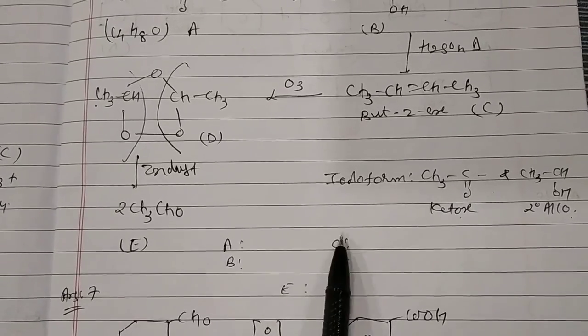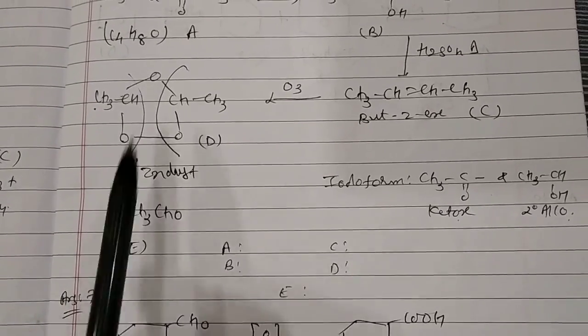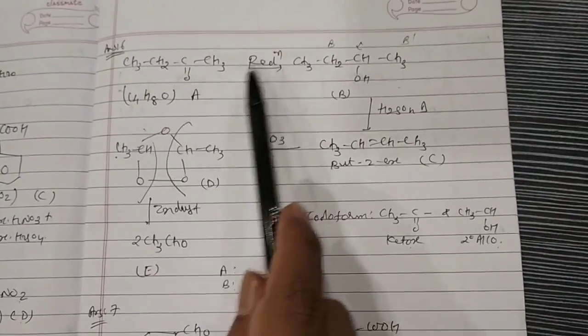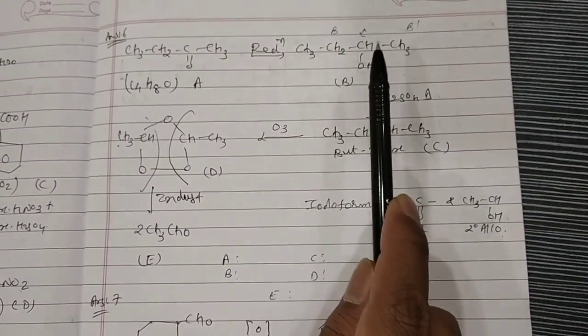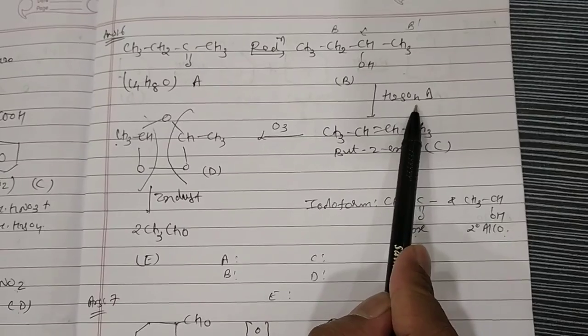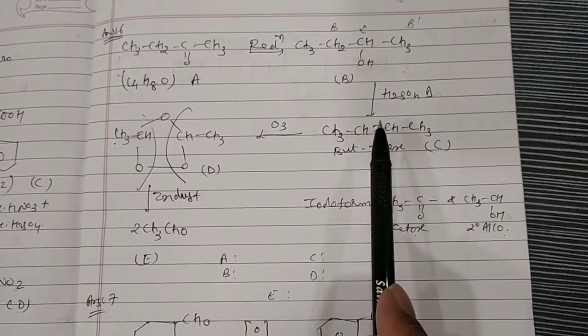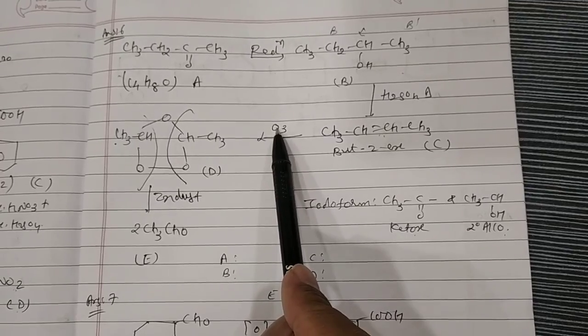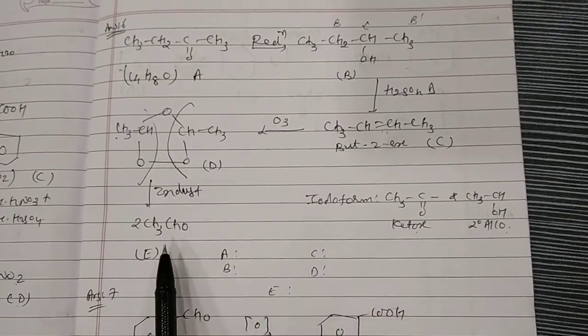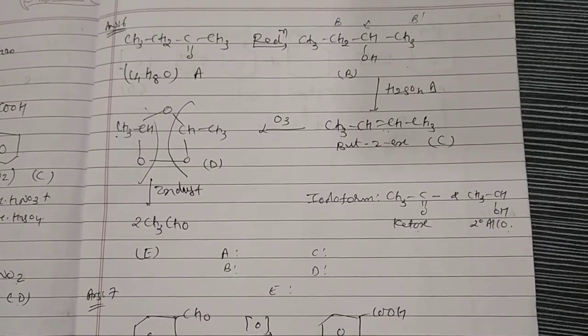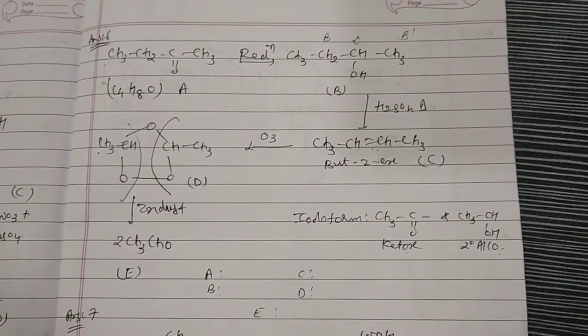Identify A, B, C, D, and E. That is your ketone. Ketone undergoes reduction to get alcohol. Alcohol undergoes dehydration to get alkene. Alkene undergoes ozonolysis then hydrolysis to get acetaldehyde. So A, B, C, D, E, this is all about your numerical.